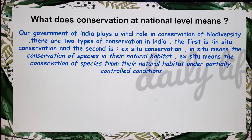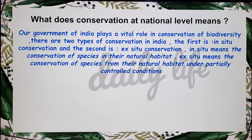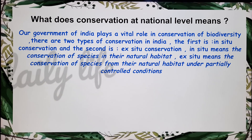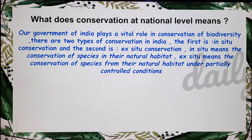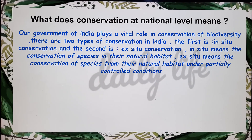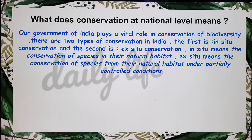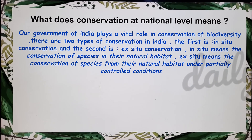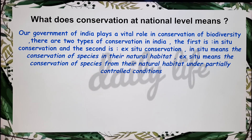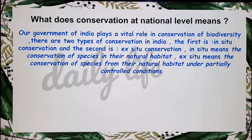What does conservation at the national level mean? The Government of India plays a vital role in conservation of biodiversity. There are two types of conservation in India: in-situ conservation and ex-situ conservation. In-situ means conservation of species in their natural habitat — animals are being conserved in their habitat. Ex-situ means conservation of species from their natural habitat under partially or fully controlled conditions.